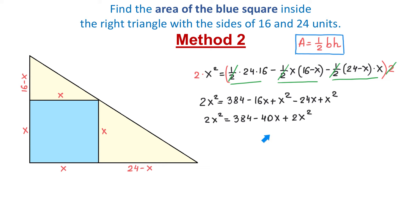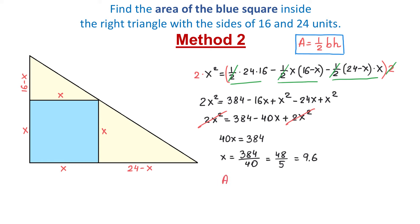We see the 2x squared term on both sides and cancel it. Adding 40x to both sides gives 40x equals 384. Dividing both sides by 40, x equals 384 over 40, which reduces to 48 over 5, or 9.6. To find the area we raise 9.6 to the second power and get 92.16 square units. This was method 2 — let's move to method 3.